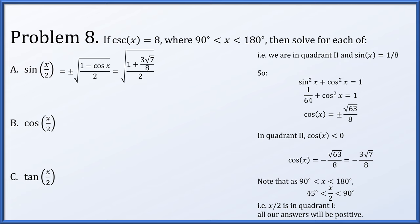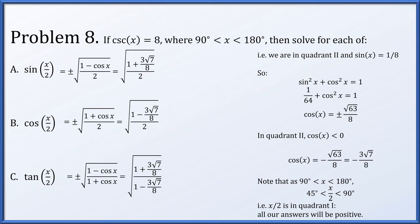We work through the half-angle formulas. Sine of x/2 equals the positive square root of (1 minus cos x)/2. We know cosine of x is minus 3√7/8, so we substitute that in. Similarly, cosine of x/2 equals the positive square root of (1 plus cos x)/2, with cosine of x being minus 3√7/8. And tangent of x/2 equals the positive square root of (1 minus cos x)/(1 plus cos x), again substituting cosine of x equals minus 3√7/8. All of these could be further simplified algebraically, but the trigonometry is complete.